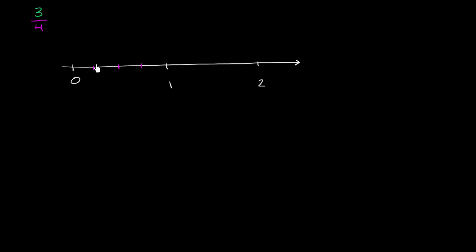Now 3 fourths means that I've gone three out of the four spaces towards 1. So I've gone 1, 2, 3. So this point right over here on the number line, this is 3 over 4.